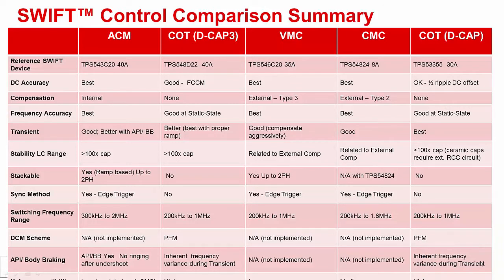This slide illustrates the differences between select TI products that employ various DC-DC topologies. Internally compensated current mode control is not new — there have been several products from TI and others that have offered internal compensation for some time. However, the compensation is good for a very restricted set of operating conditions, particularly operating switching frequency.